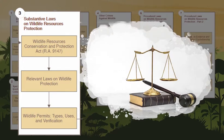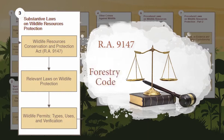The third module, Substantive Laws on Wildlife Resources Protection, covers the laws in wildlife protection and conservation, such as the Wildlife Resources Conservation and Protection Act, or RA 9147, the Forestry Code, E-NIPAS, and the Fisheries Code. It also provides a guide to permits used to authorize and monitor wildlife trade.